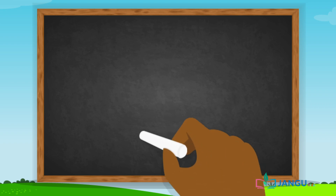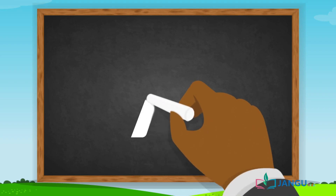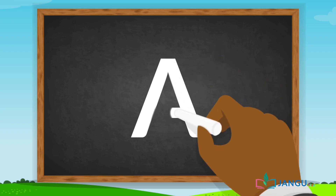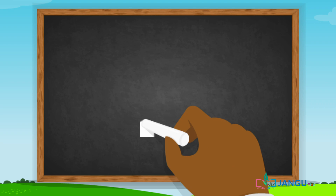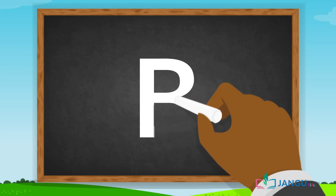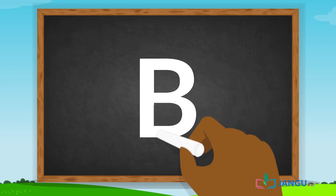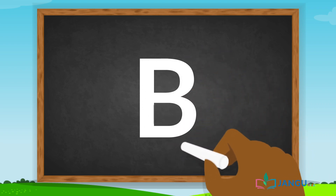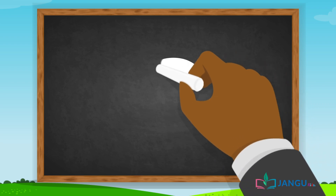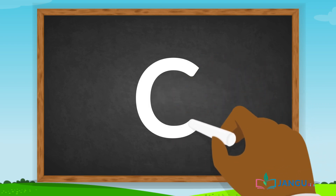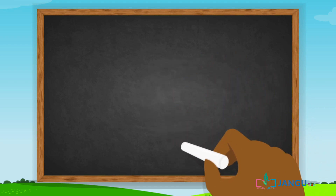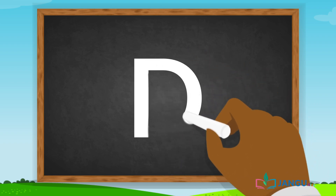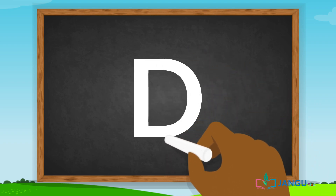A is a triangle with a short straight line in the middle. B is a long line with two half circles. C is half of a circle. D has a long straight line with half of a circle.